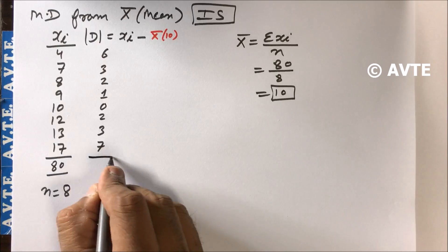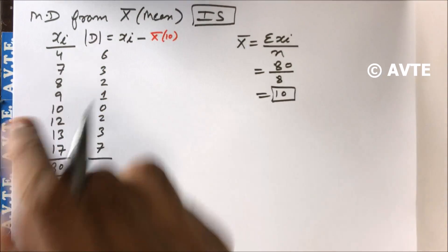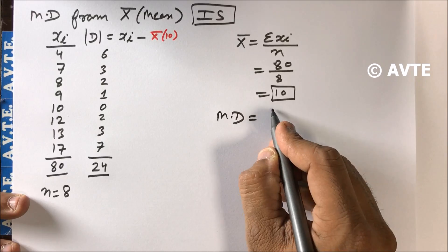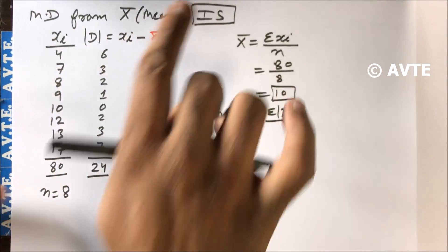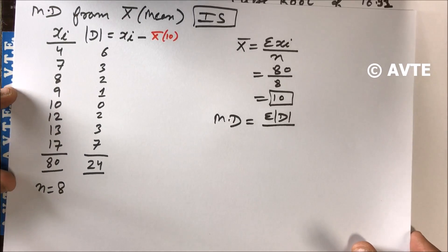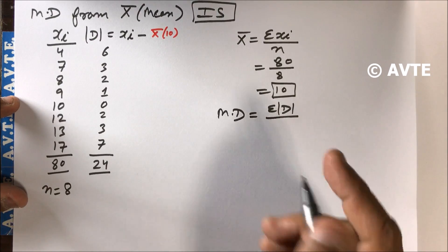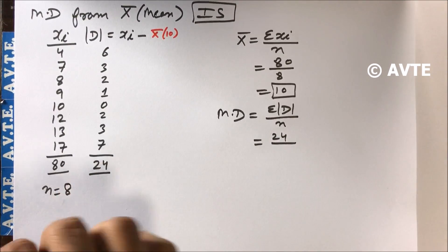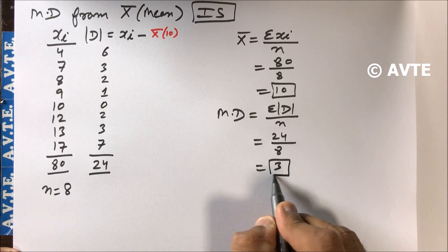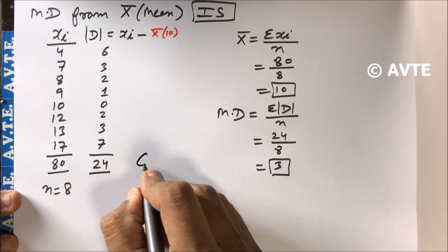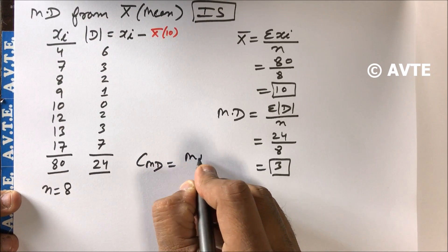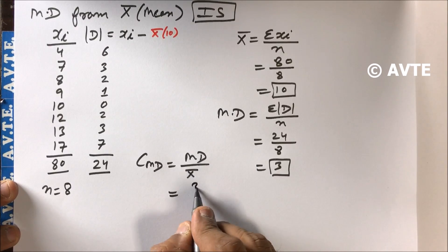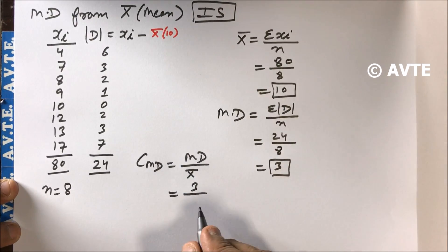We sum all mod D values: sigma mod D equals 24. Mean deviation for individual series is sigma mod D upon small n, that is 24 divided by 8, which equals 3. Now the coefficient of MD is MD upon mean, since we are finding mean deviation from mean. Mean deviation is 3 and mean is 10, so the coefficient is 0.3.